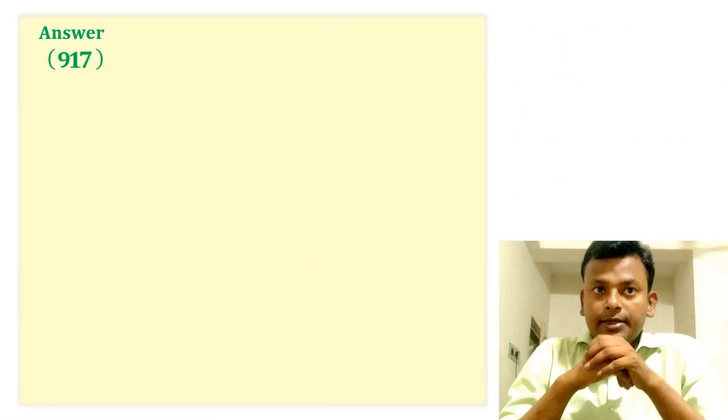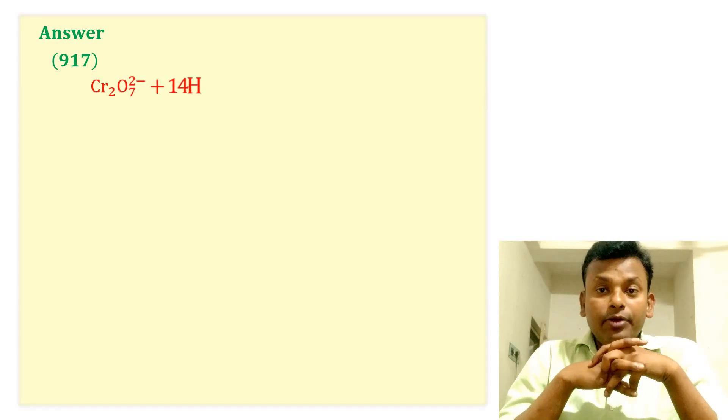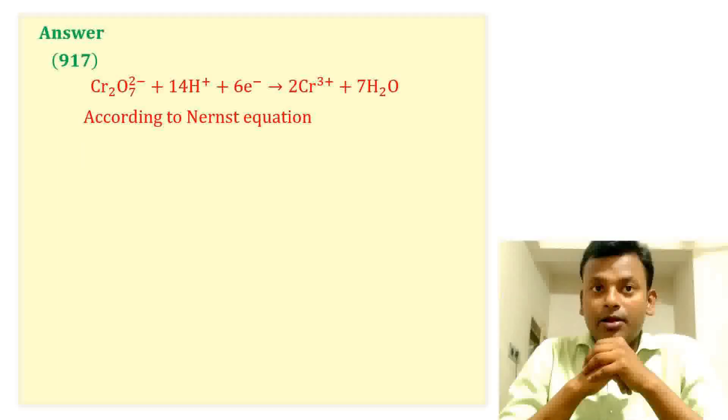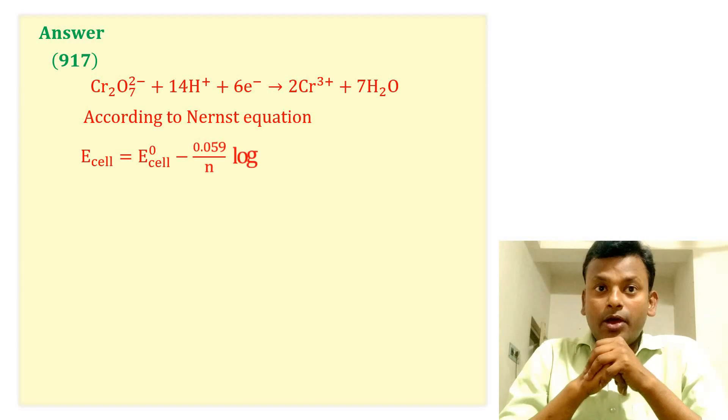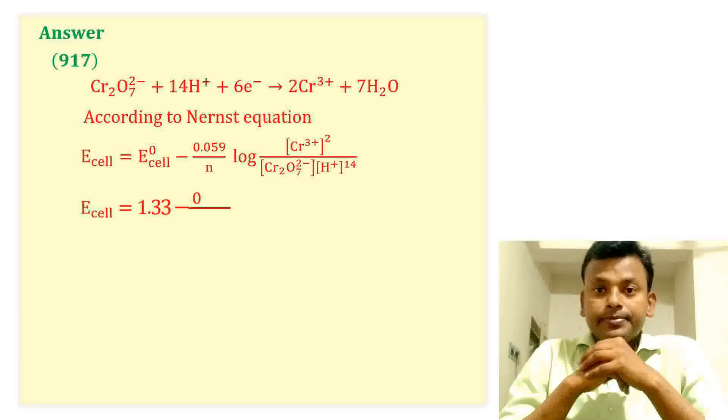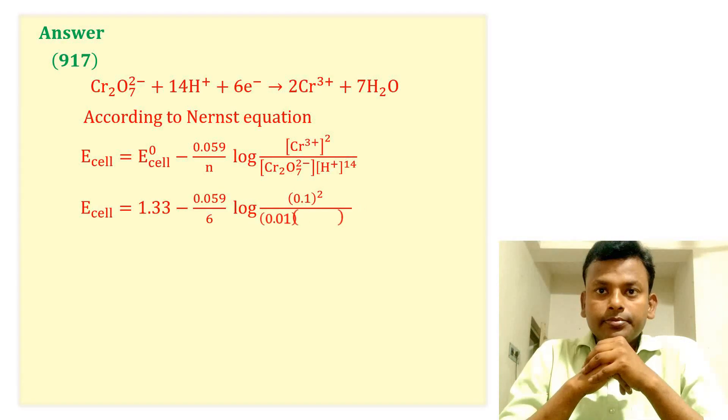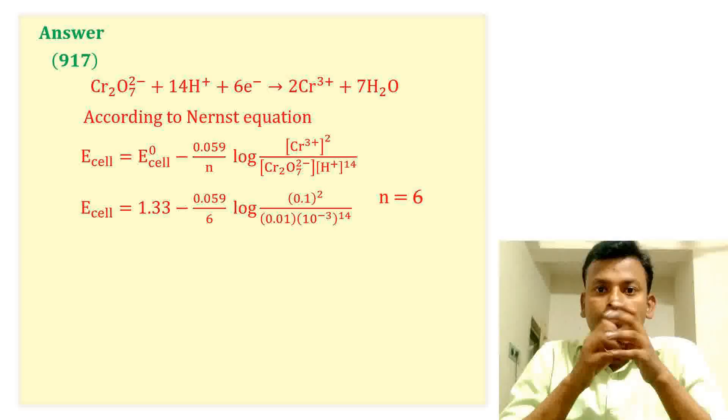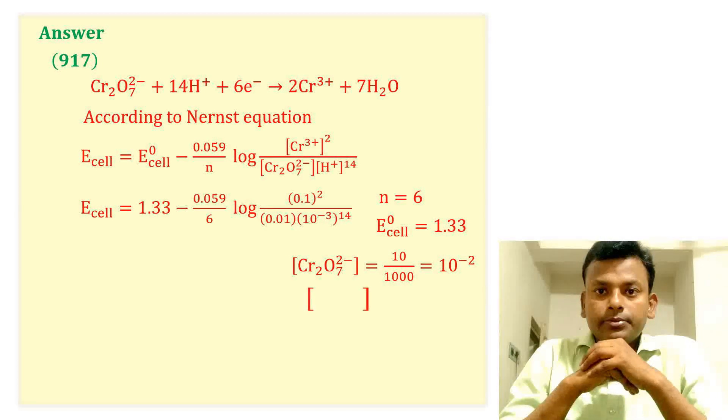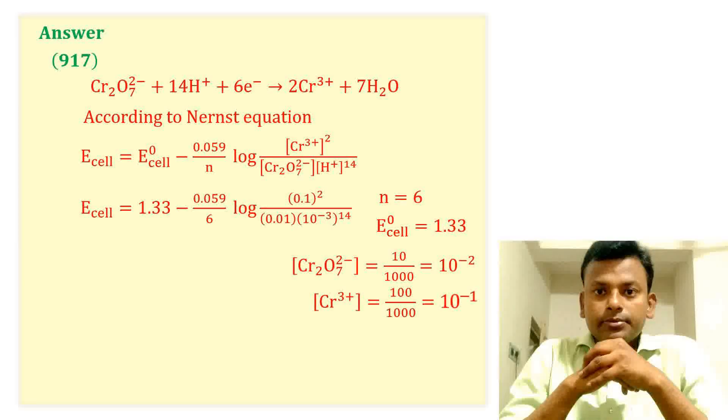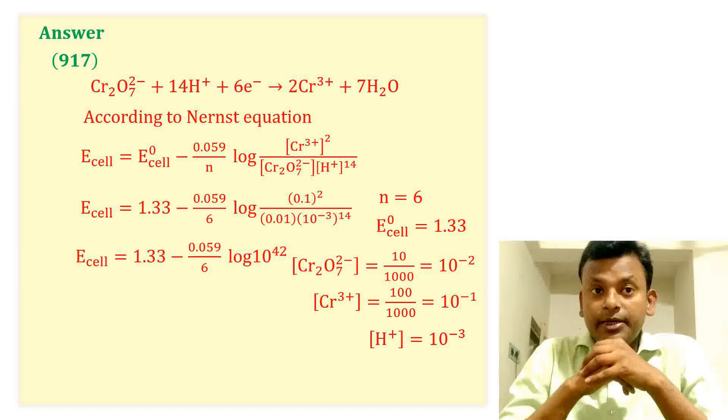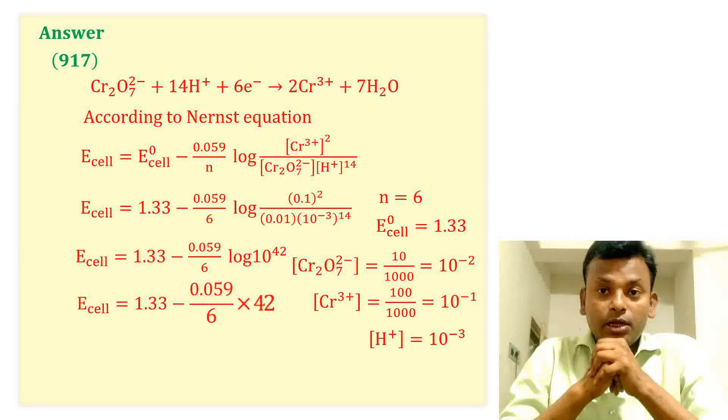Answer is 970. This is the equation. According to Nernst equation, E cell equals to E0 cell minus 0.059 by n log Cr3 plus squared Cr2O7 2 minus H plus to the power 14. Putting all values, E cell equals to 970 into 10 to the power minus 3 volt.